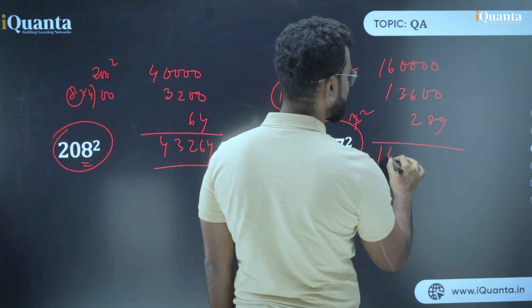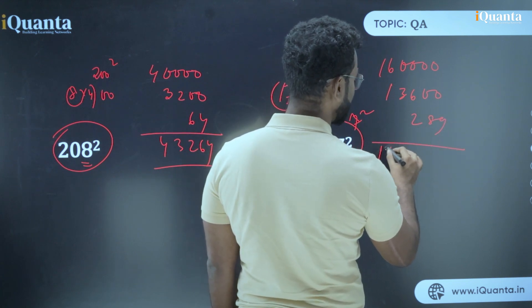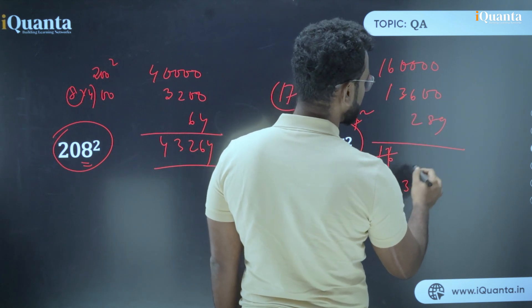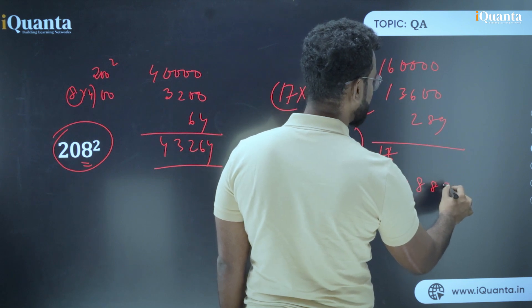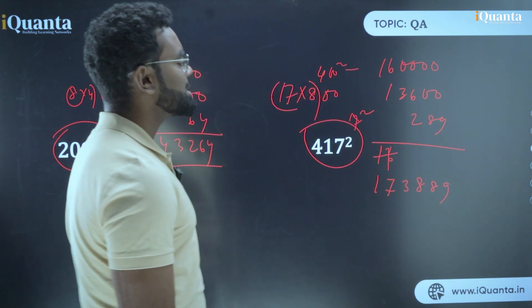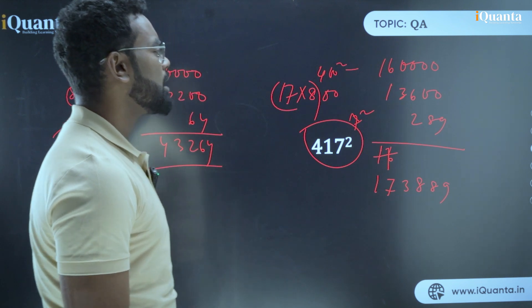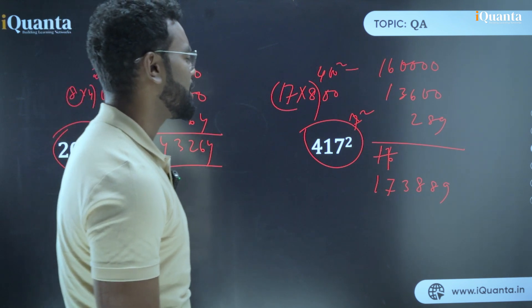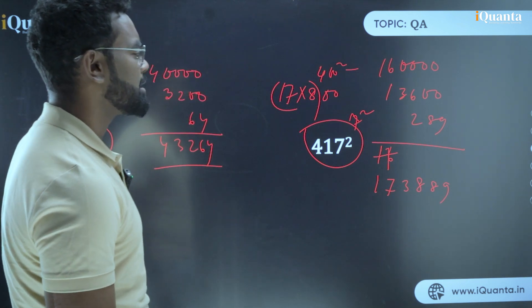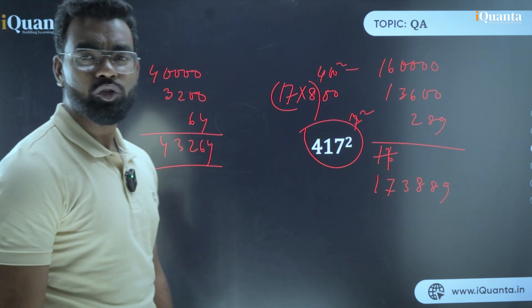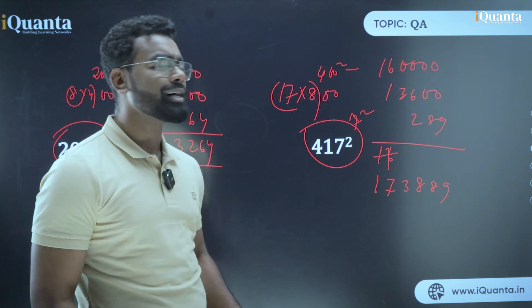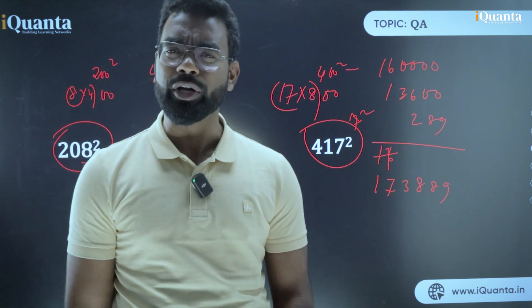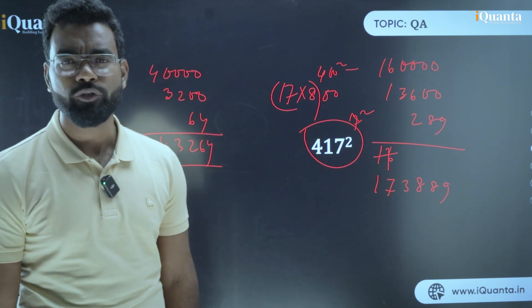Now what is your answer? Your answer is 17 - that is 8, that is 89. So that is 173,889. 160,000 plus 13, that is 173,000 plus 600 plus 289 is 173,889. So this is how we can do the other squares also. But for the time being, you just need to focus on mostly on the squares till 130. That's what we are going to do for the time being.